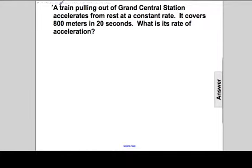A train is pulling out of Grand Central Station and accelerates from rest at a constant rate. It covers a displacement of 800 meters and a time of 20 seconds. What is the rate of the acceleration?